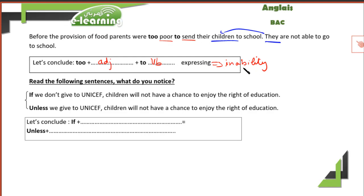Let's focus now on these two sentences. Read the following sentences and note what you observe. First one: 'If we don't give to UNICEF, children will not have a chance to enjoy the right of education.' Express it differently — these two sentences have the same meaning, but here we have 'if,' and in the second one we have 'unless': 'Unless we give to UNICEF, children will not have a chance to enjoy the right of education.'